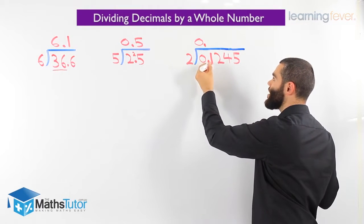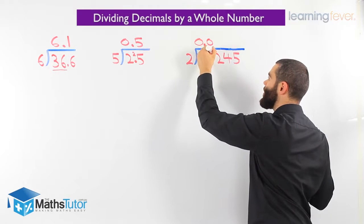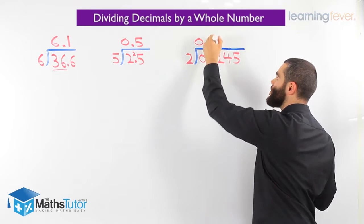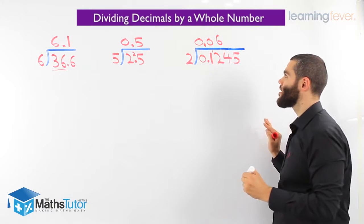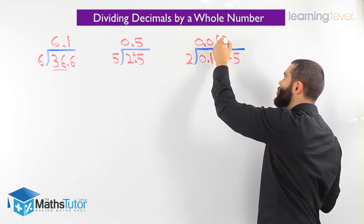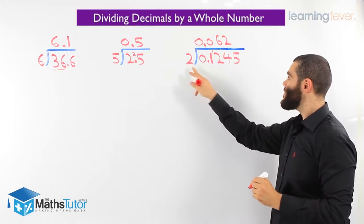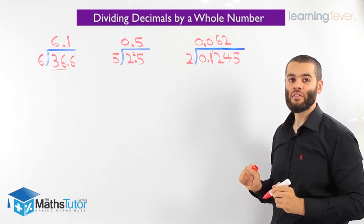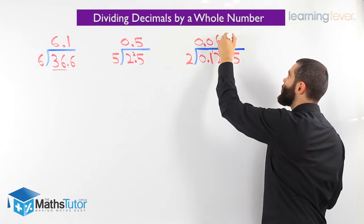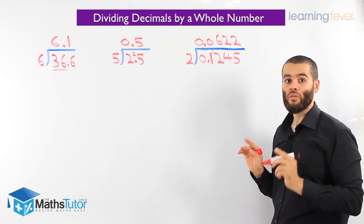How many 2's go into 1? None. We carry the 1. How many 2's go into 12? 6. How many 2's go into 4? 2. How many 2's go into 5? We know 2 goes into 5 twice, but we notice there's a remainder.